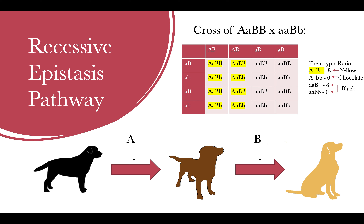In another instance, you may have a cross between a dog that is AABb and a dog that is aaBb. The first dog would be yellow and the second dog would be black. We know this because the first dog has dominant alleles for both loci, and the second never passes the first step in the pathway because it is recessive at the A locus.